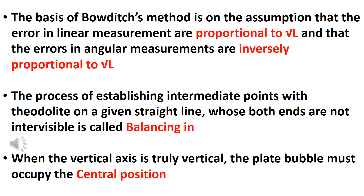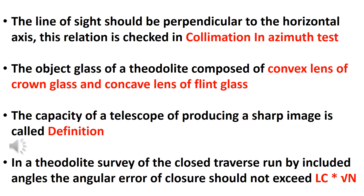When the vertical axis is truly vertical, the plate bubble must occupy the central position. The line of sight should be perpendicular to the horizontal axis. This relation is checked in the collimation-in-azimuth test.